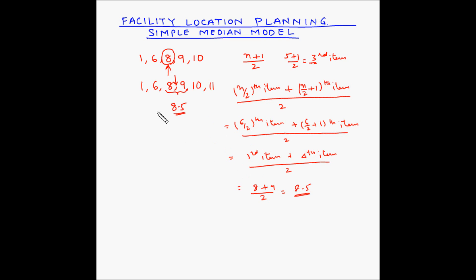In the simple median model, the median refers to the median of the load — load can be a truckload of shipment to be transported between the existing facilities and the new facility. This model assumes that the movement of goods between facilities is done only along the x and y axes, and no movement is done diagonally.